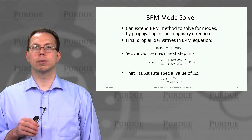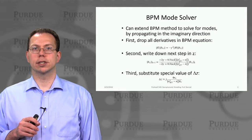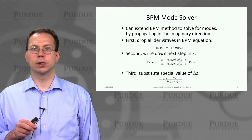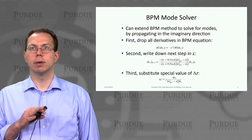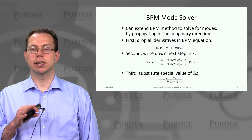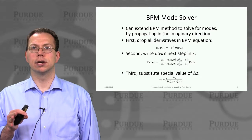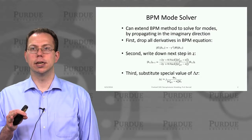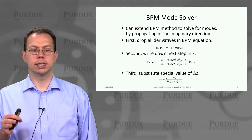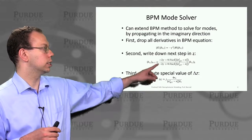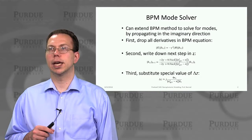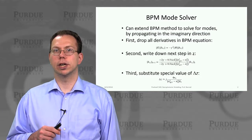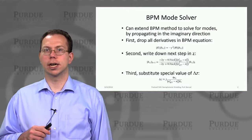The way we do it is actually fairly simple. We take the fairly complex beam propagation methods, which included first and second derivatives in Z, drop all of those derivatives, and then just keep this equation here, which kind of looks like a spring equation for a harmonic oscillator.